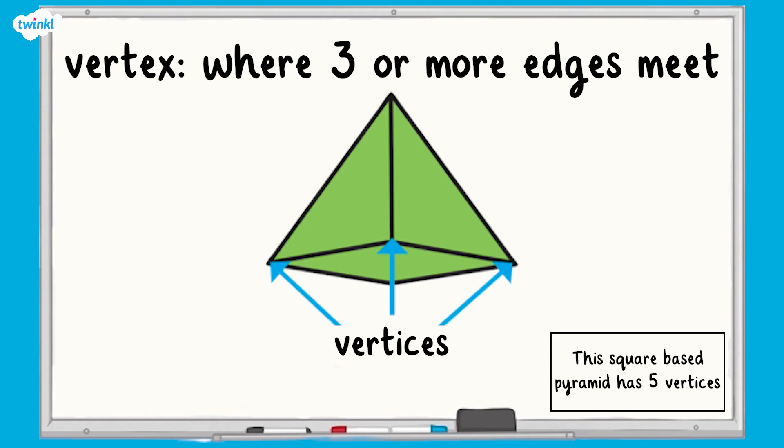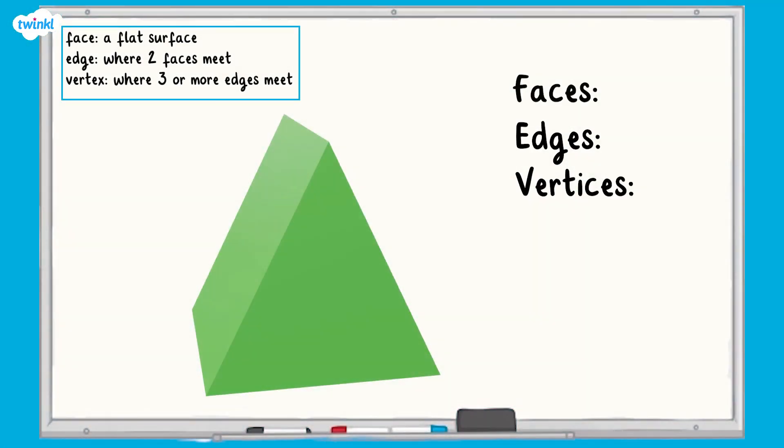A vertex is a point where three or more edges meet on a 3D shape. This square-based pyramid has five vertices. Let's use this vocabulary to describe a 3D shape. This is a triangular prism.